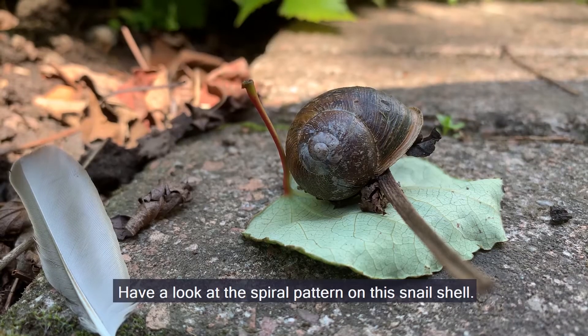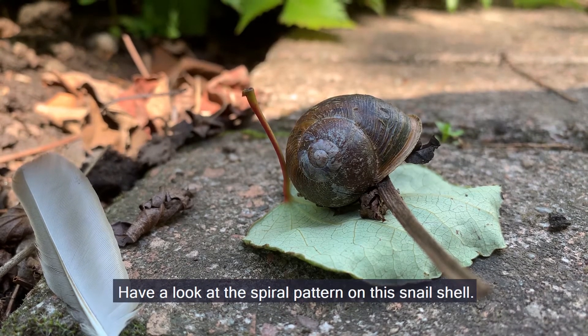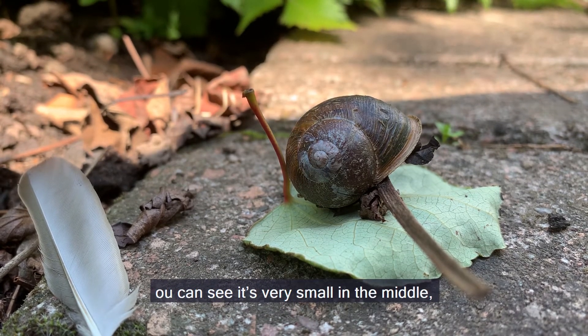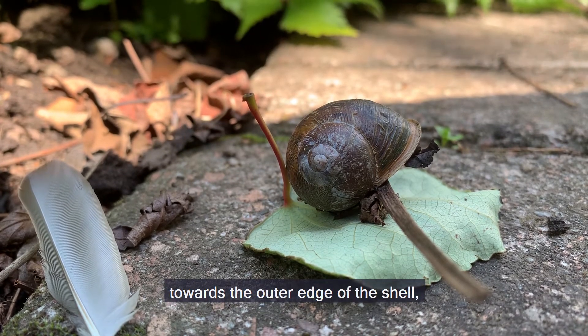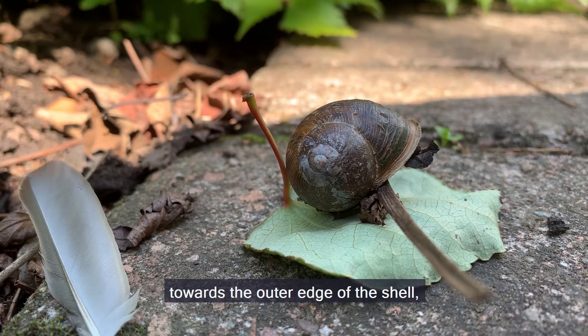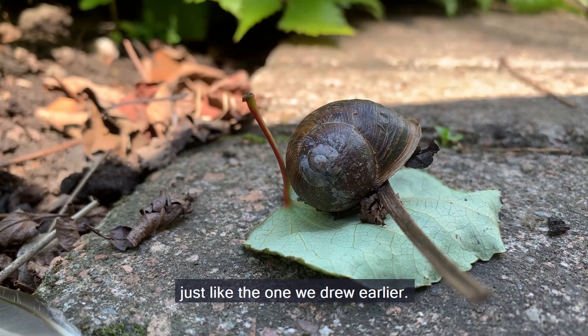Have a look at the spiral pattern on this snail shell. You can see it's very small in the middle and gradually gets bigger and bigger towards the outer edge of the shell, just like the one we drew earlier.